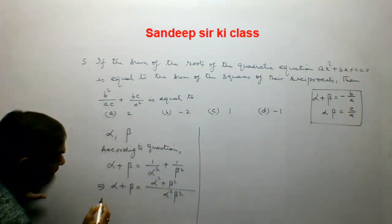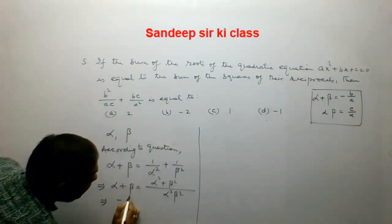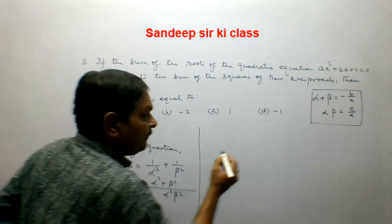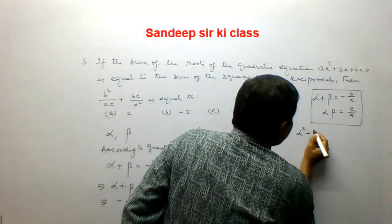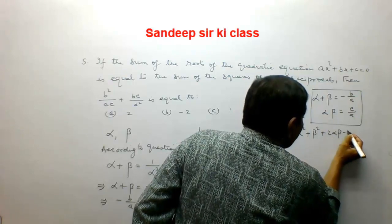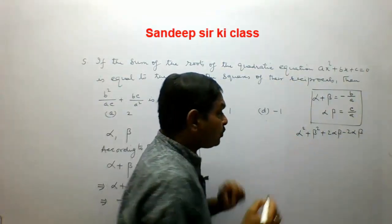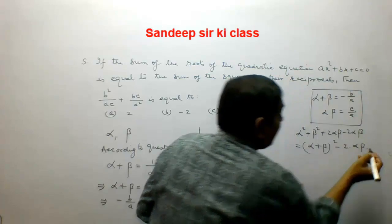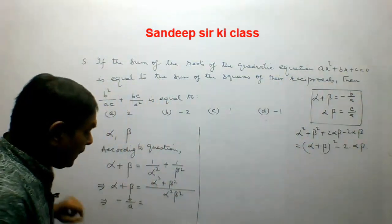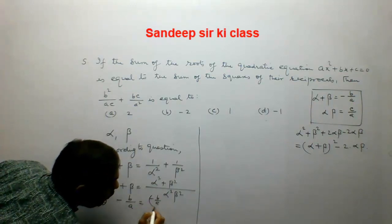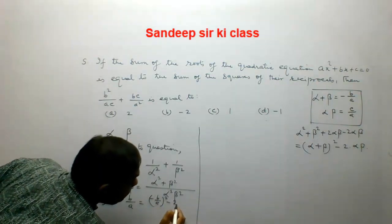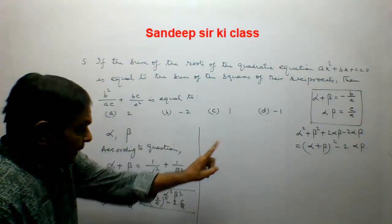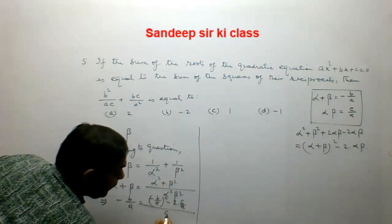Substituting these values, -b/a equals (α² + β²) / (α²β²). Now α² + β² can be written as (α + β)² - 2αβ, which equals (-b/a)² - 2(c/a). And α²β² equals (c/a)².